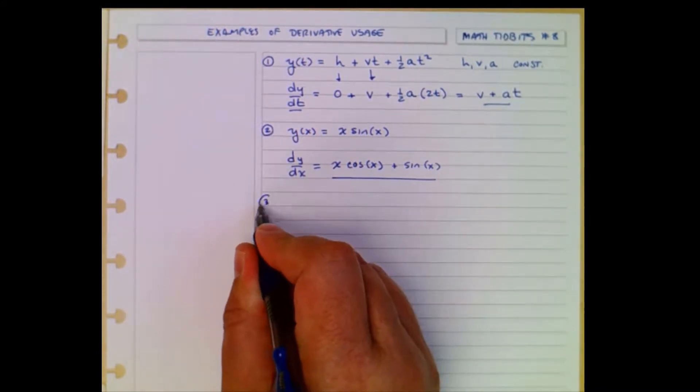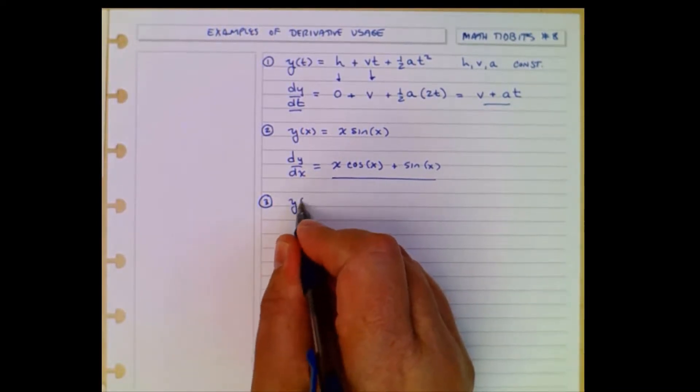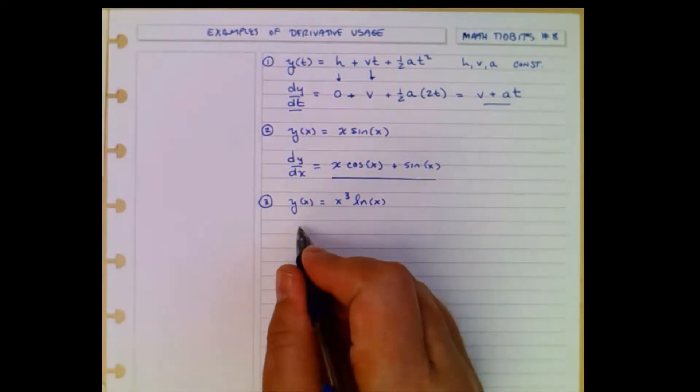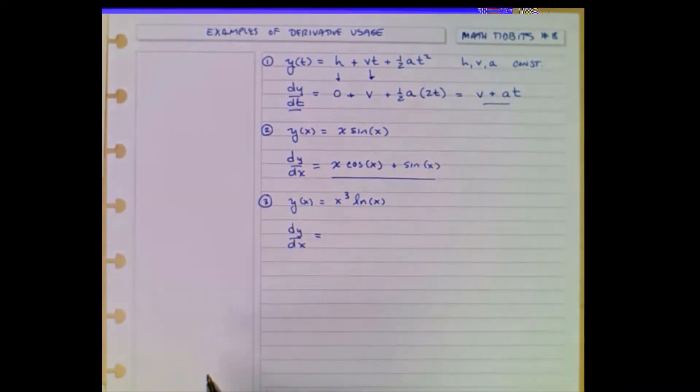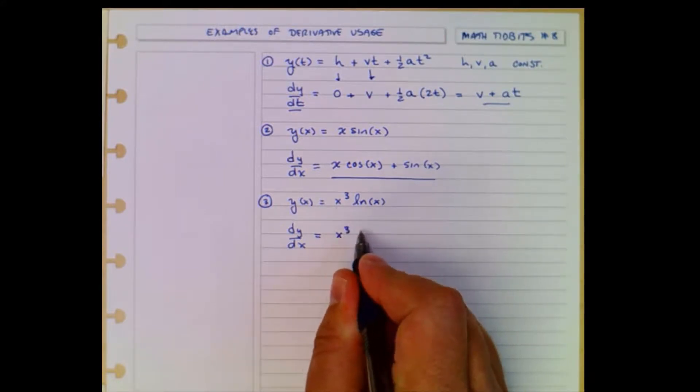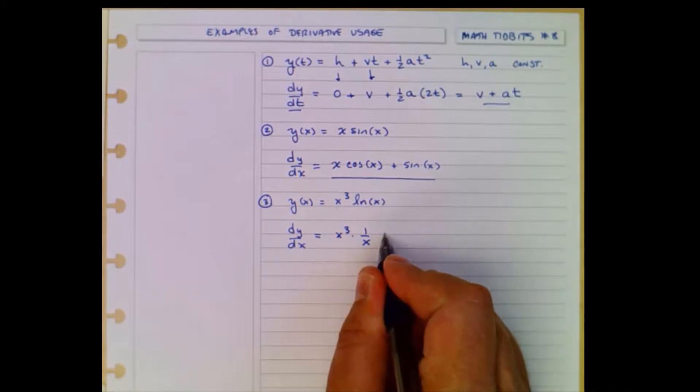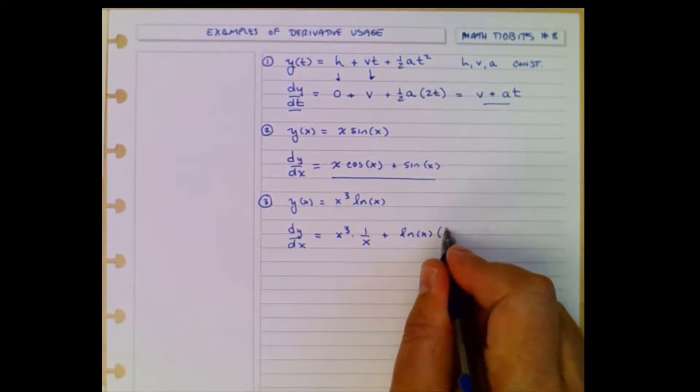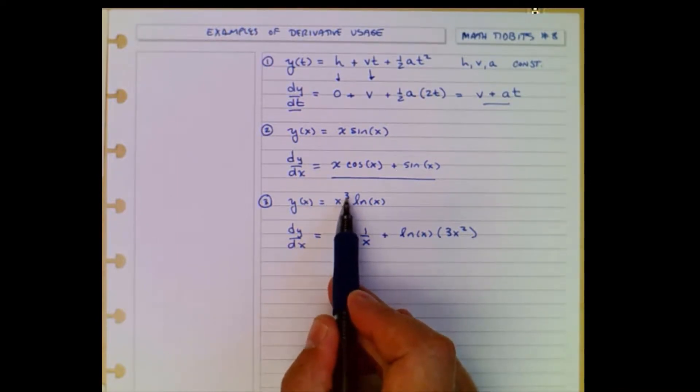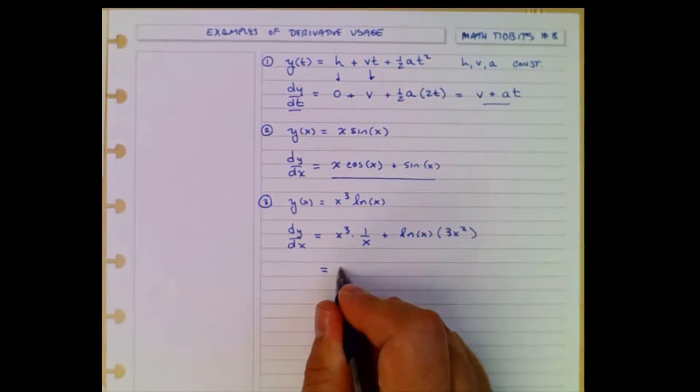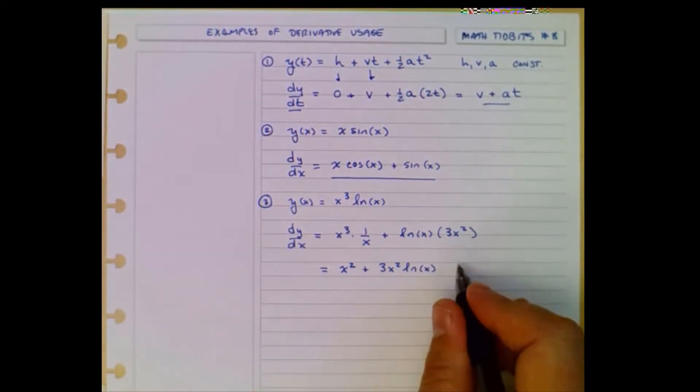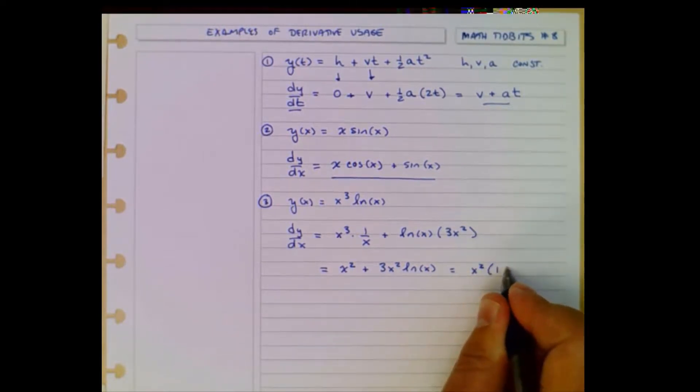Number three. Let's take maybe a less familiar product here. Y of x equals x cubed times the natural log of x. So dy dx. Again, first times the derivative of the second plus the second times the derivative of the first. First is x cubed, derivative of the second is 1 over x, and then we have the second log x times the derivative of the first, 3x squared. I take 3 down, put it in front, and then the 3 becomes a 2, so 3x squared. So this then is x squared plus 3x squared log x. And we can even be more compact and say this is x squared times 1 plus 3 log x.